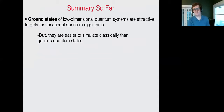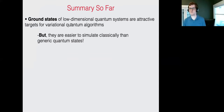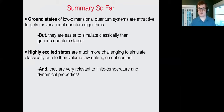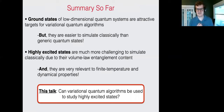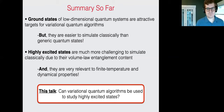So the summary so far: ground states of low-dimensional quantum systems are attractive targets for variational quantum algorithms, but they are easier to simulate classically than generic quantum states. Meanwhile, highly excited states are much more challenging to simulate classically due to their volume law entanglement, and they are actually of interest because they are relevant to finite temperature and dynamical properties. So in this talk, the question I'm going to ask is: can variational quantum algorithms be used to study highly excited states? And what would such an algorithm look like?